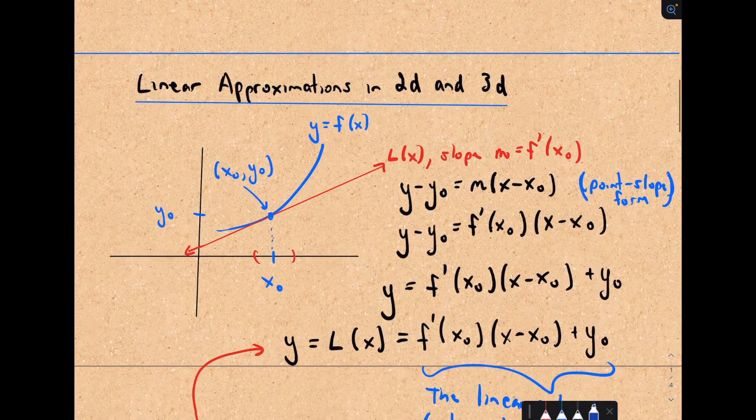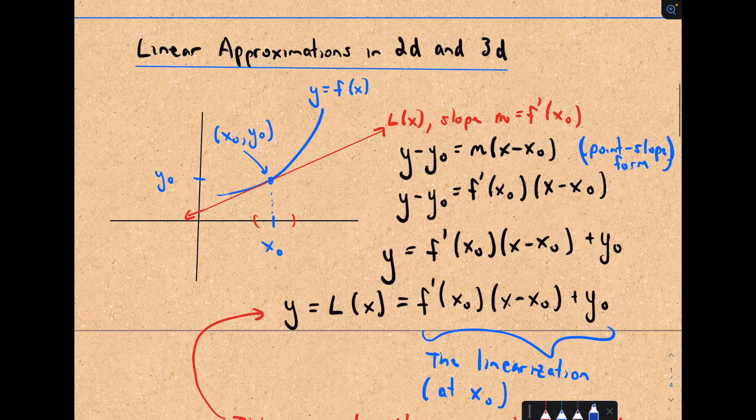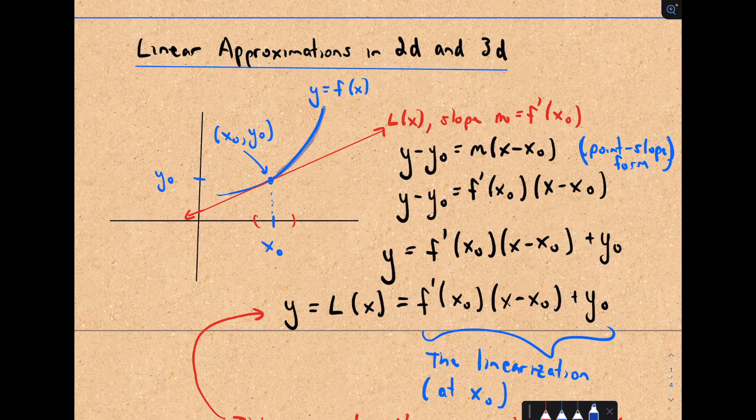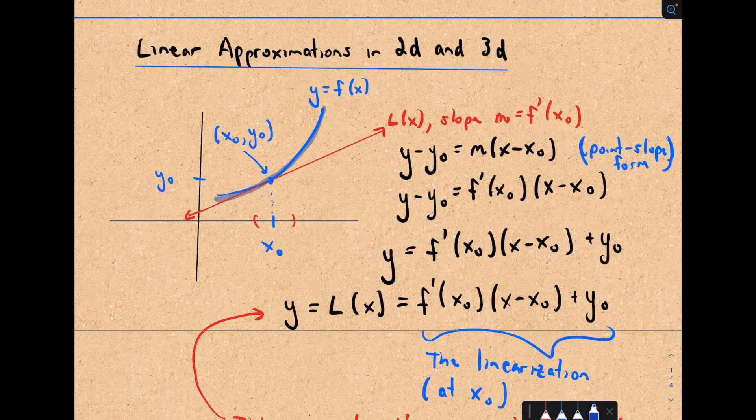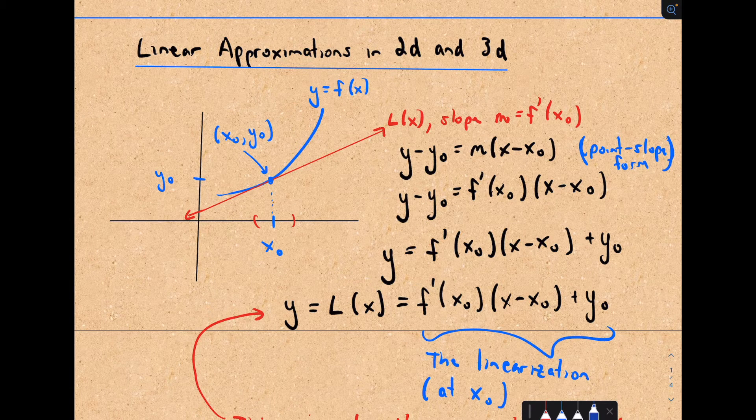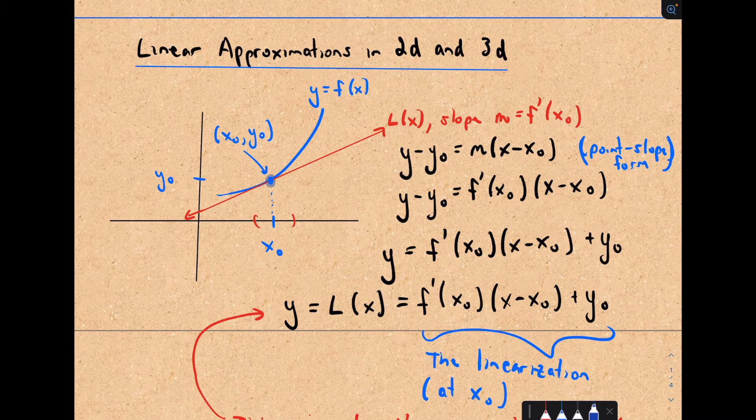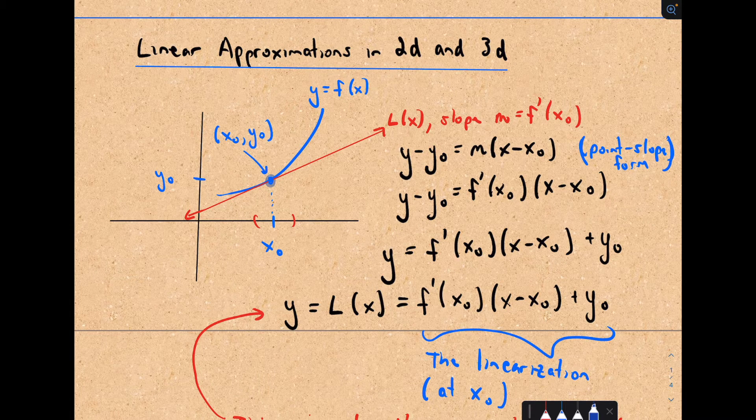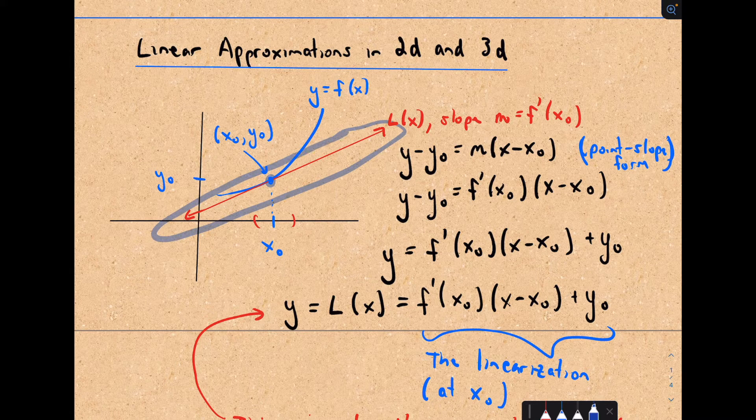Just to remind you about linear approximations in two dimensions. Remember in that case, we've got some function, in this case here my curvy function y equals f of x, and the idea is we pick some point on that function, and we'll find the equation of a tangent line.